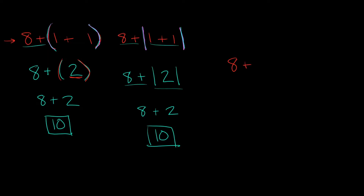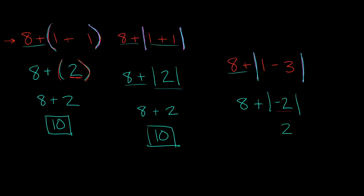What if we had 8 plus the absolute value of (1 minus 3)? We have absolute value bars, so that's where we start. Let's simplify what's inside: 1 minus 3 equals negative 2. So now we have 8 plus the absolute value of negative 2. What is the absolute value of negative 2? That's just positive 2. So we're left with 8 plus 2, which is 10.